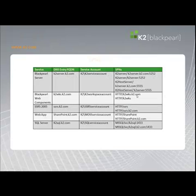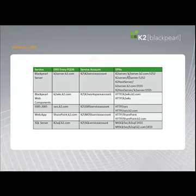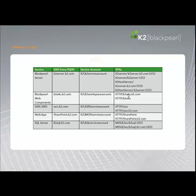Let's take a look at a good example of some service principal names associated with K2. Since K2 created these applications and controls both the client and server portions, they created the service type of K2 server. In this case, the K2 server is running on a machine whose fully qualified domain name is K2server.k2.com, and we know the client will be looking for this on port 5252. So we need to register that port number as part of the application's username. You can see that repeated with K2server.k2.com on a different port as well — both are different usernames that have to be addressed.